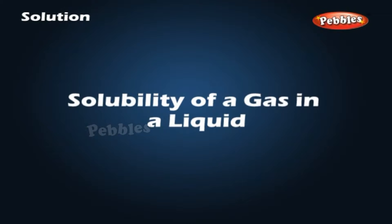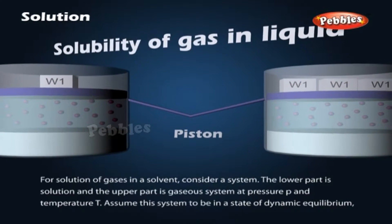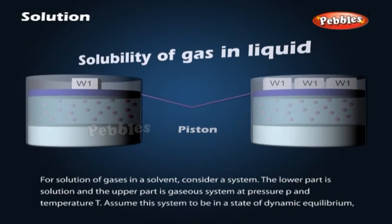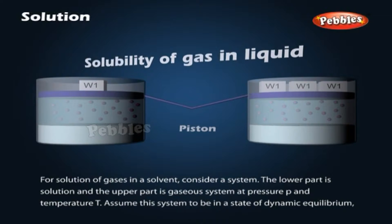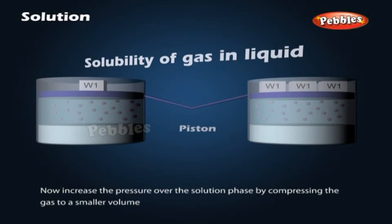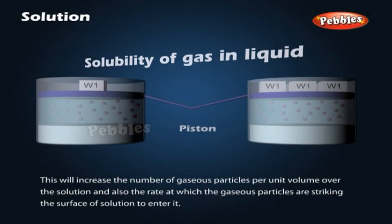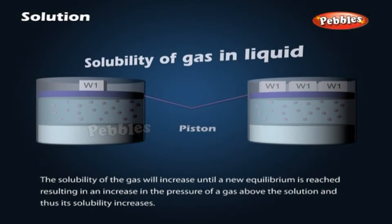Solubility of a gas in a liquid: Consider a system as shown in the figure. The lower part is solution and the upper part is a gaseous system at pressure P and temperature T. Assume this system to be in a state of dynamic equilibrium. Now, increase the pressure over the solution phase by compressing the gas to a smaller volume. This will increase the number of gaseous particles per unit volume over the solution and the rate at which gaseous particles strike the surface of solution to enter it. The solubility of the gas will increase until a new equilibrium is reached, resulting in an increase in the pressure of the gas above the solution, and thus its solubility increases.